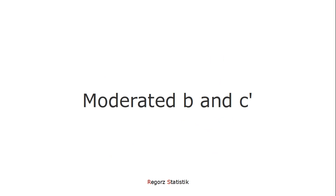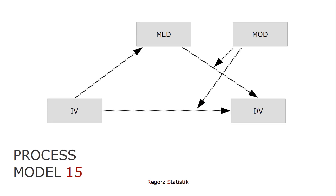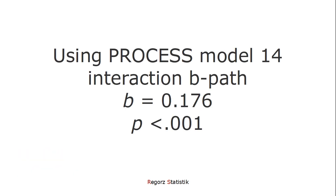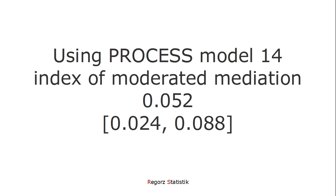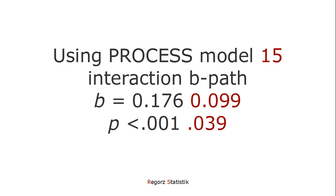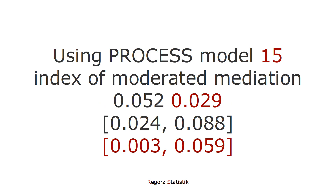Now the second case: the true relationship is that our moderator moderates both the B path and the C prime path. Let's see what happens if we use process model 14 in this situation. For this simulated dataset, I got a significant interaction for the B path, and a significant index of moderated mediation using process model 14 — even though the true model would have been process model 15. Comparing with process model 15, the correct model, I get a much smaller interaction for the B path. It's still significant but with a much higher p-value. So using process model 14 has biased our estimate for the interaction of the B path, and the index of moderated mediation is biased too.